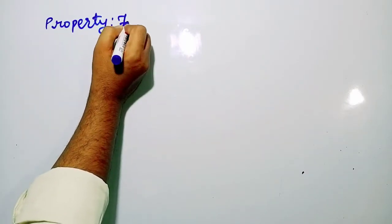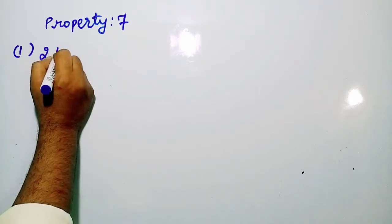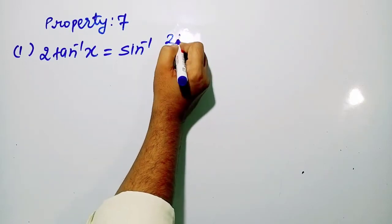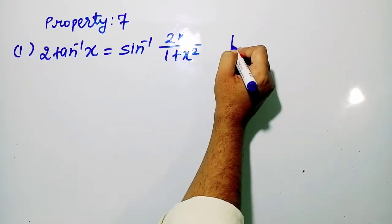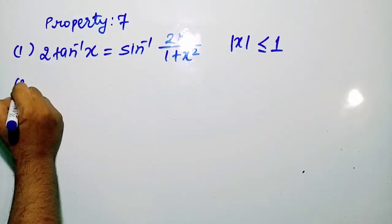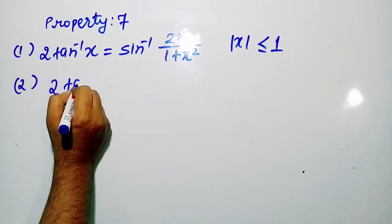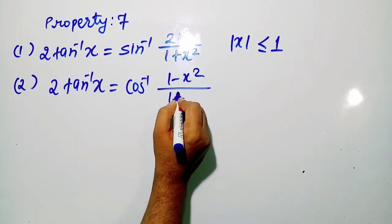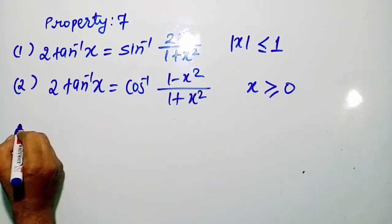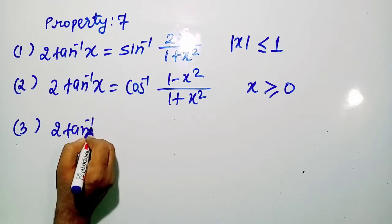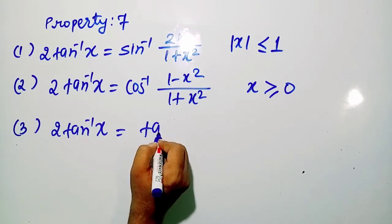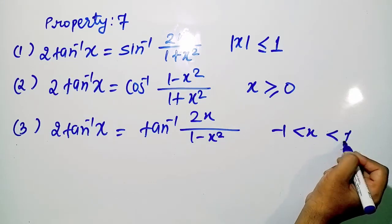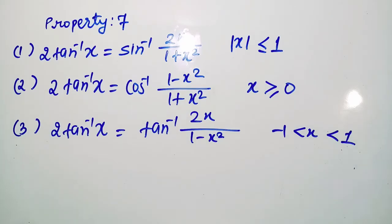Properties number 7. The first one: 2 sin⁻¹ x expressed in terms of sin⁻¹. So 2 sin⁻¹ x = cos⁻¹(1 − 2x²), if x ≥ 0. Third, 2 tan⁻¹ x = tan⁻¹(2x/(1 − x²)), where x lies in (−1, 1).